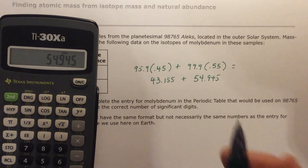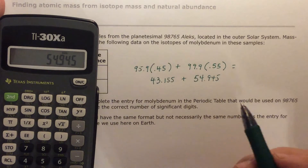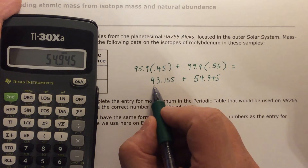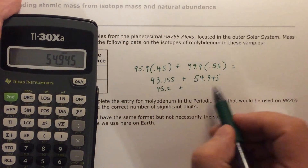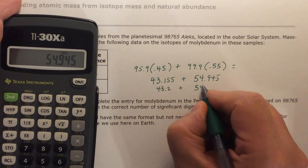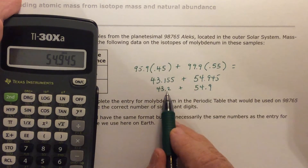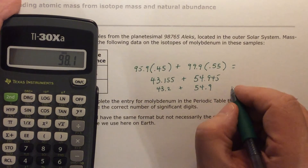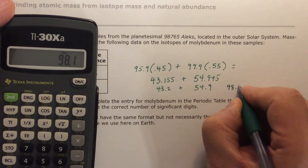So if you remember, this is three significant digits, and three significant digits — so you're going to have to round to three significant digits before you add. So this is going to be 43.2. And then this is three significant digits, which is going to be 54.9. Now when you're adding, they're both to the tenths place, so I'm going to round to the tenths place. So 43.2 plus 54.9 gives me 98.1.